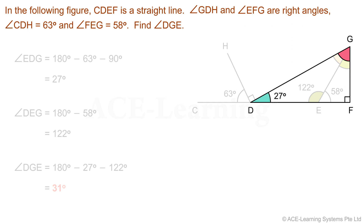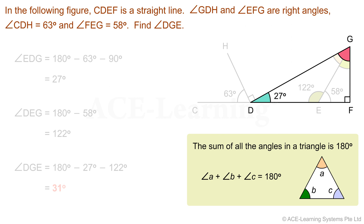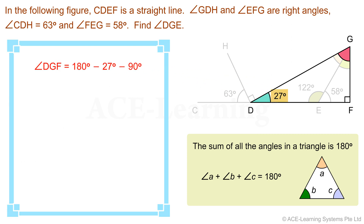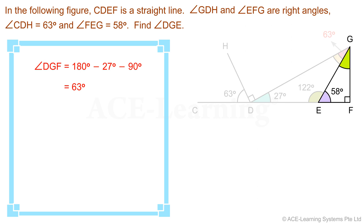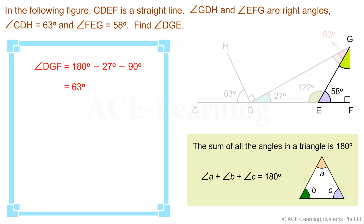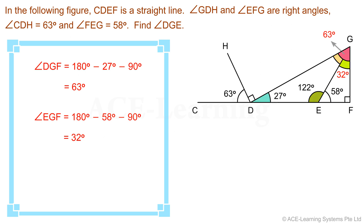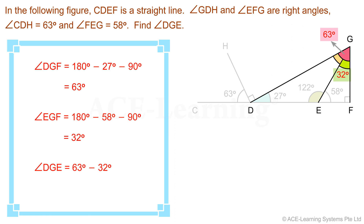Based on the property that the sum of all angles in a triangle is 180 degrees, angle DGF equals 180 degrees minus 27 degrees minus 90 degrees, which equals 63 degrees. Similarly, angle EGF equals 180 degrees minus 58 degrees minus 90 degrees, which equals 32 degrees. Therefore, angle DGE equals 63 degrees minus 32 degrees, which equals 31 degrees.